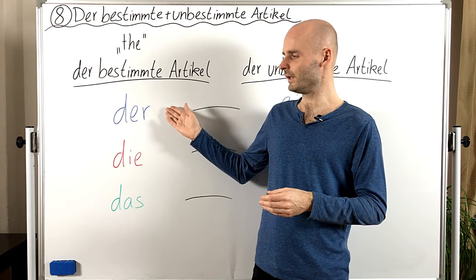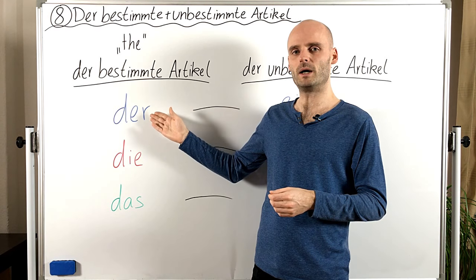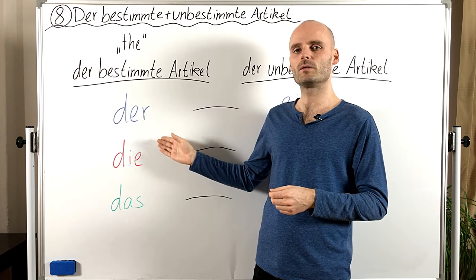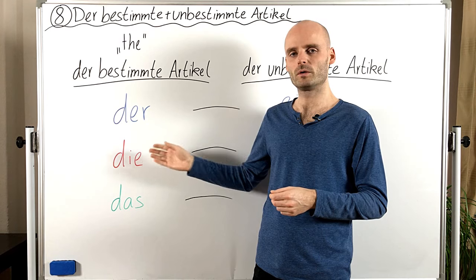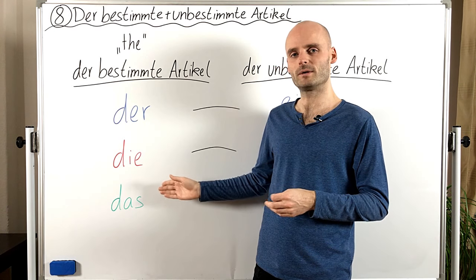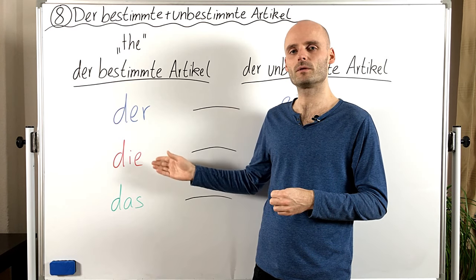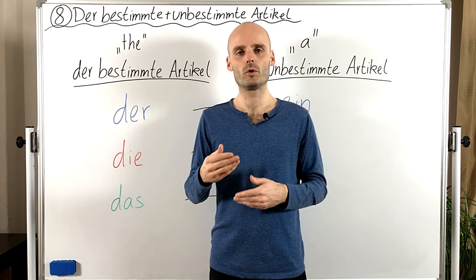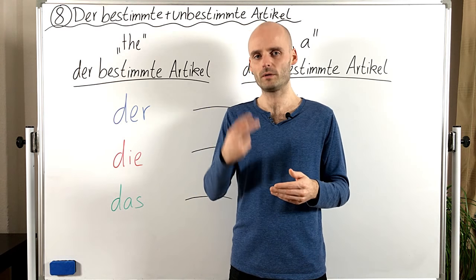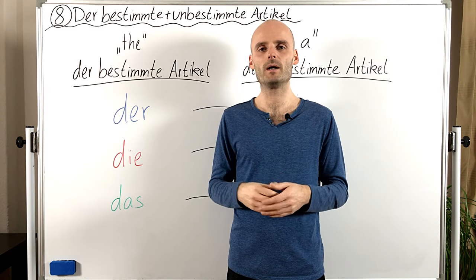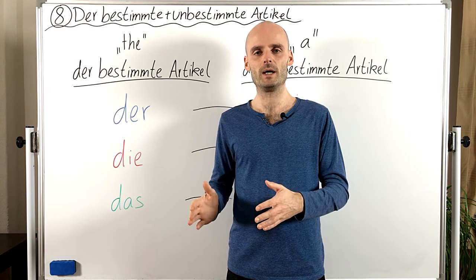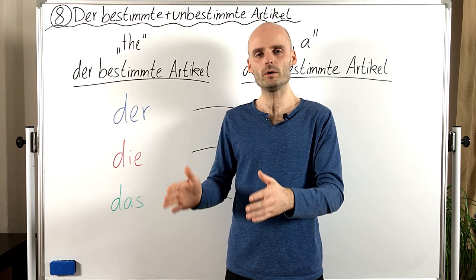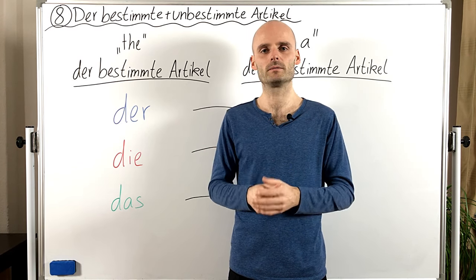Also, 'der', maskulin, ist blau. 'Die', feminin, ist rot. Und 'das', neutral, ist grün. Also, gucken wir uns ein paar Beispiele an von Nomen und den Artikeln.